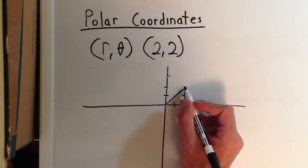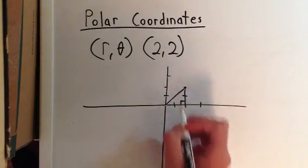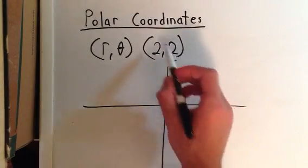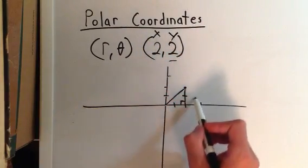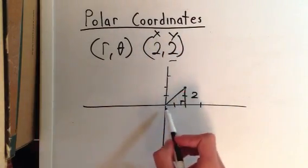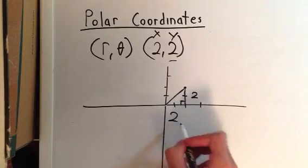And we know the value of this is the y-value, which represents the height of the triangle, which is 2, and the x-value, the length of the triangle, is also 2.